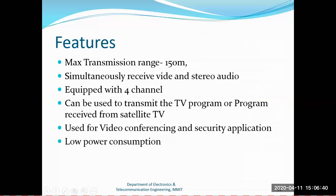So what can be the features of this Wi-Fi TV? The maximum range of transmission is 150 meters. Obviously this is in open air - inside the house it can get reduced to 30 meters or even less than that. But it is assumed that Wi-Fi will have a range of 150 meters. Simultaneously, we can receive video and stereo audio. Stereo audio is dual audio, dual channel audio. It will be equipped with a 4-channel system.